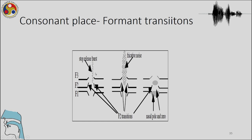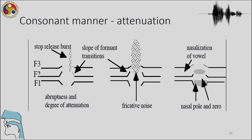The stop release burst, the fricative noise, the nasal pole-zero pattern, and F2 transitions are all important for place of articulation. For manner of articulation, the burst energy in stops, the noise in fricatives, and the low amplitude in nasals are important. The abruptness of stops, the slow hissing noise of fricatives, and the amplitude difference in nasals that distinguishes them from stops — these are all important cues. For glides, the difference between F2 and F3 is also important.